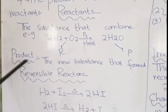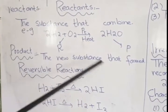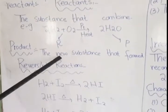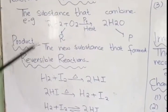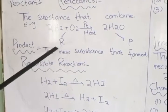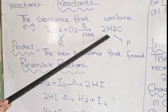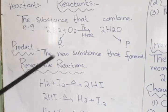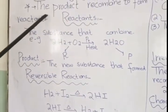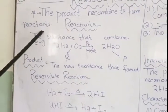So, the definition of a product: a product is a new substance formed after a chemical reaction. For example, Hydrogen plus Oxygen are the reactants, and water is the product. Now, I will explain that the products are combined with reactants in reversible reactions.